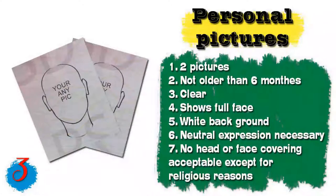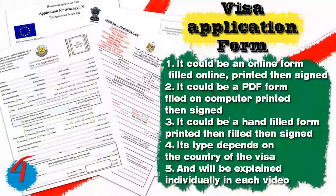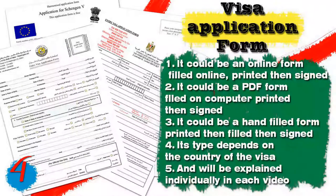Third, you will need two personal pictures no older than six months, clearly showing the full face with a white background and neutral expression — no head or face covering is accepted except for religious reasons. Fourth, you will need the visa application form, which can be an online form filled online then printed and signed, a PDF form filled on computer then printed and signed, or a hand-filled form printed then signed. The type depends on the country of the visa.